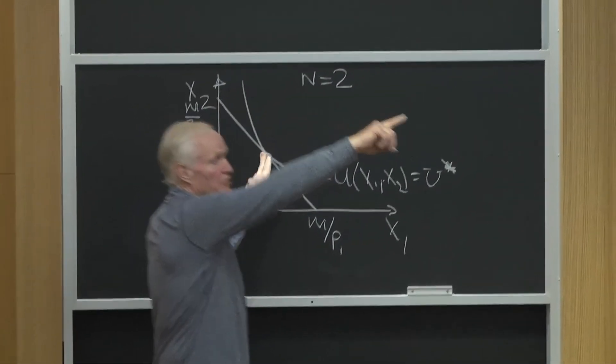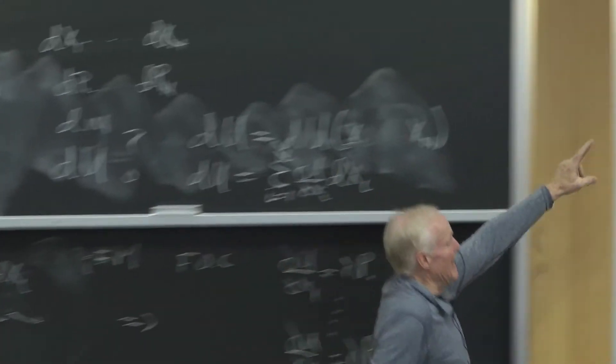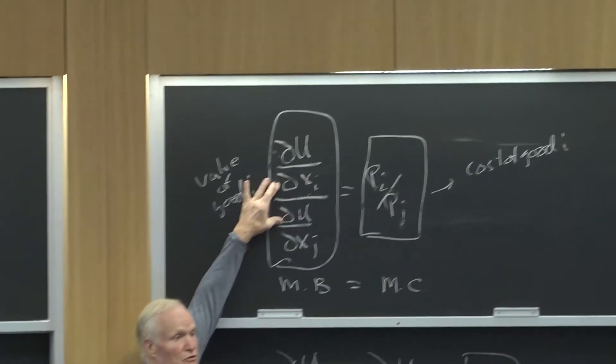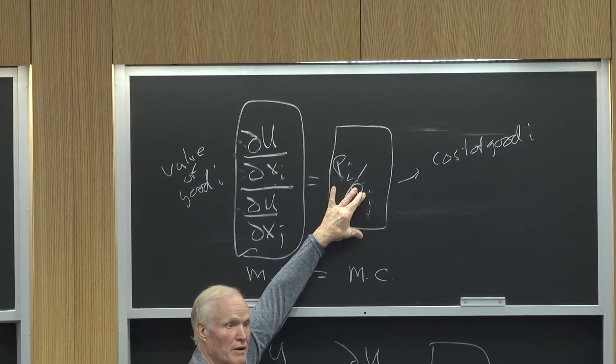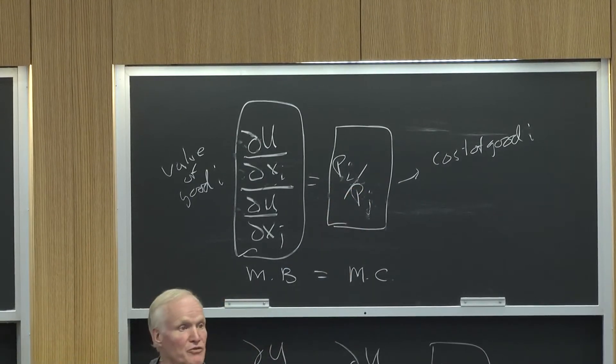That's really what that equation is. This equation here. This is the absolute value of the indifference curve slope. This is the absolute value of the budget line slope. And the equilibrium point is where those two things are equal.